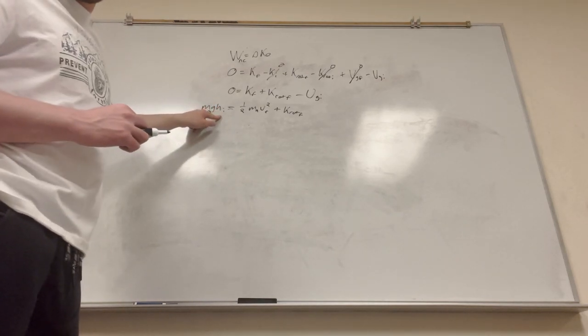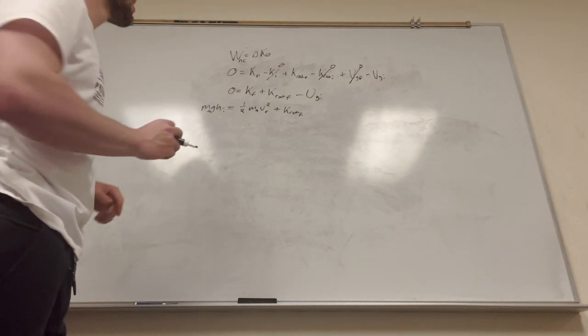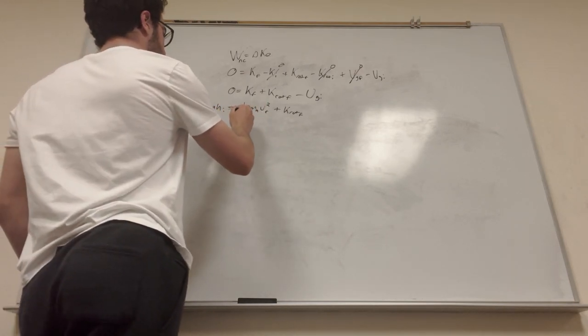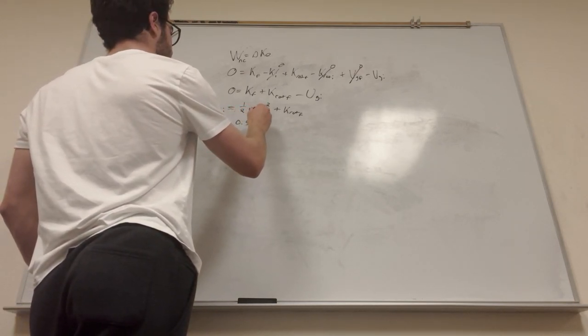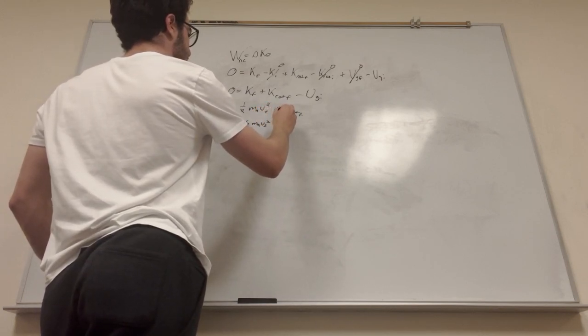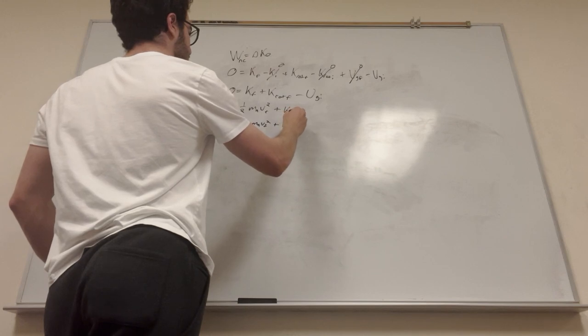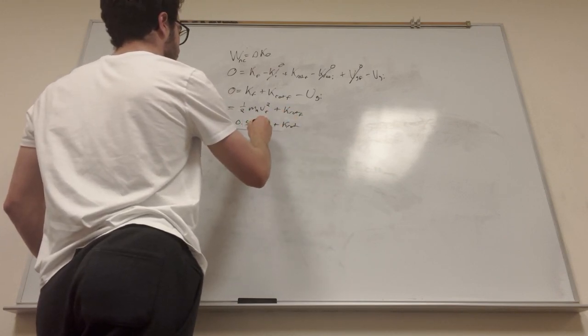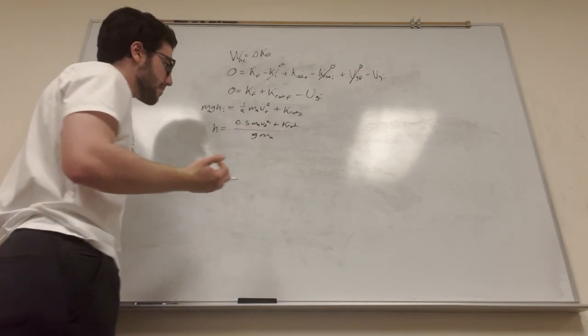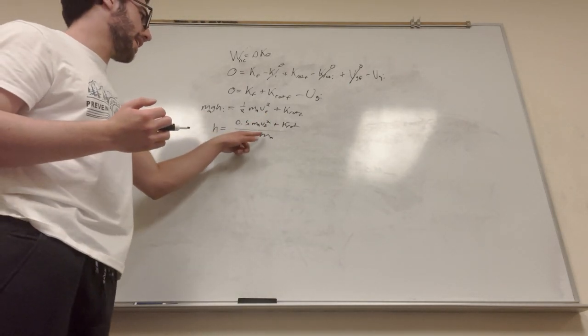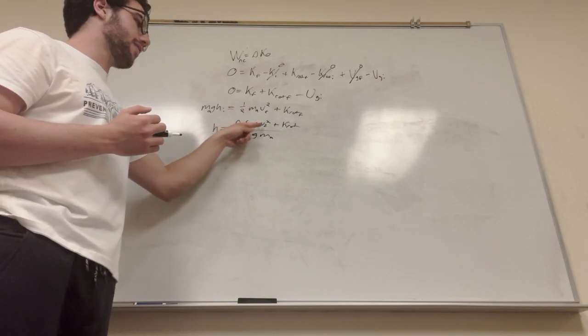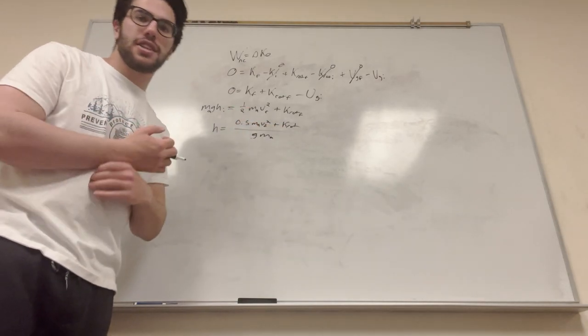So we want height, right? It's saying what's the height? So height, if we divide, we get 0.5 mass of A velocity final squared plus K rotational is equal to gravity divided by mass of A. Okay, so we have gravity, mass of A, K rotational, mass of A. We don't have height, and we don't have velocity. So we need to find one of these. We need to find velocity. How are we going to find the velocity of the rock?